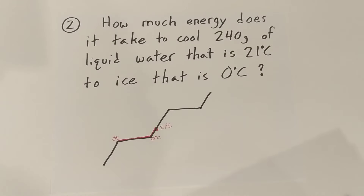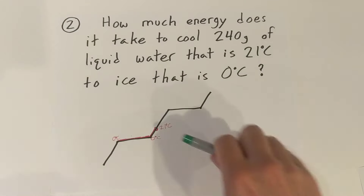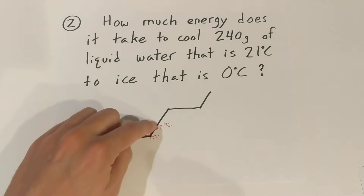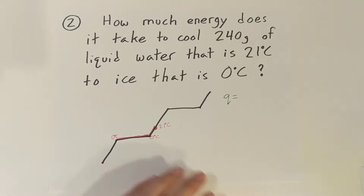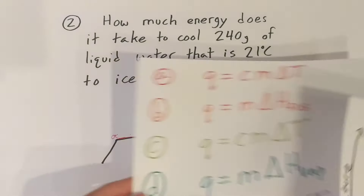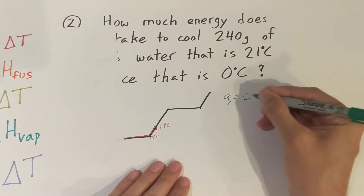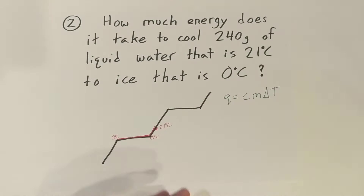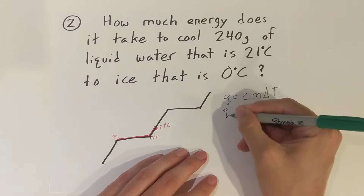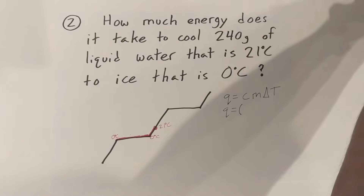We're going to need to figure out the heat released when going from 21 degrees to zero degrees, and then how much heat is released as it freezes. Let's start working on those equations. We'll start with how much heat was released going from 21 to zero degrees. That will be Q of part C, because we're a liquid. So it'll be Q equals C times M times delta T.